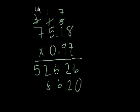Carry the 4. 9 times 7 is 63, plus 4 is 67.